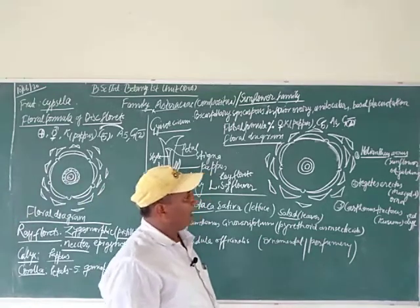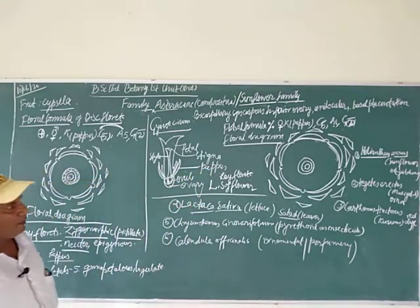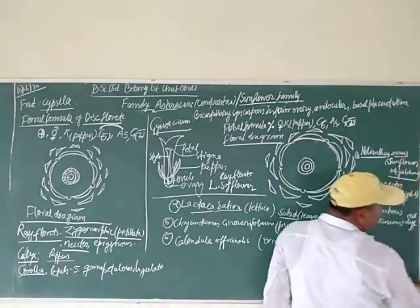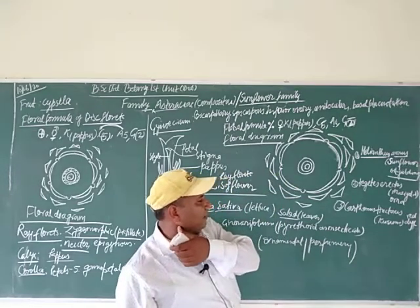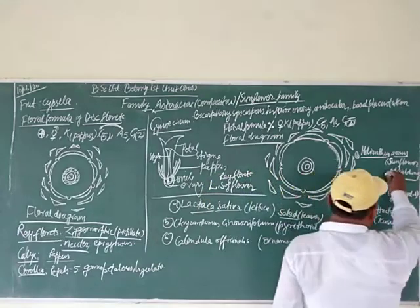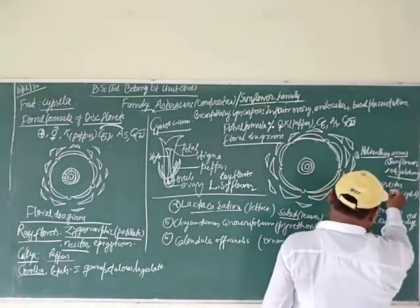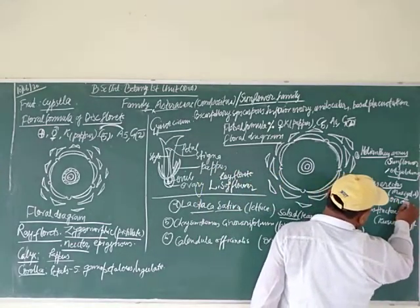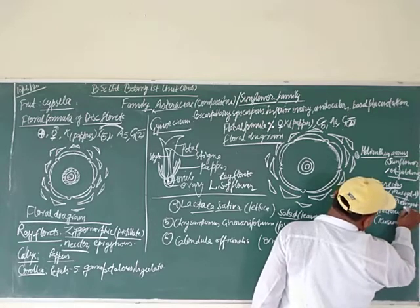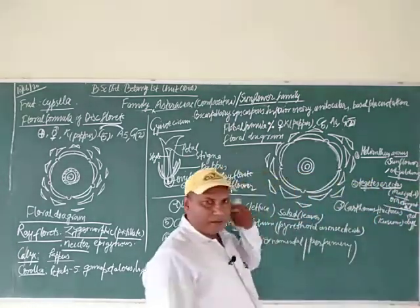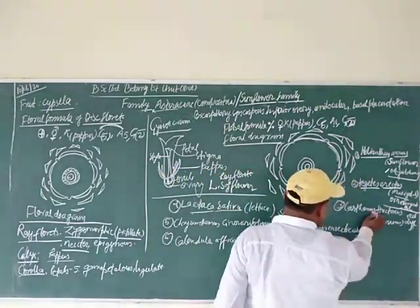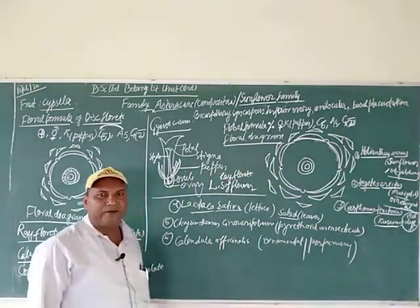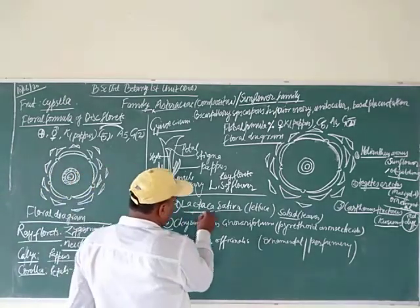Now there are important plants of economic importance. Sunflower is an important oil plant — used mainly for oil. Tagetes erectus is the marigold, which is an ornamental plant. Carthamus tinctorius provides a red dye. Chrysanthemum cinerariaefolium — from which pyrethrin is obtained — is used as an insecticide to kill insects.